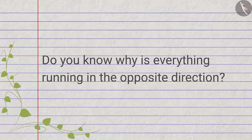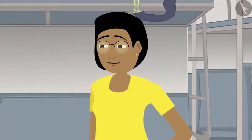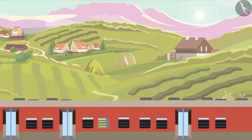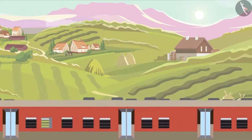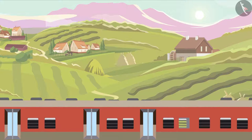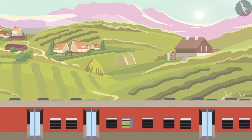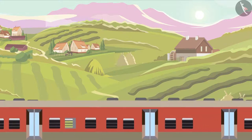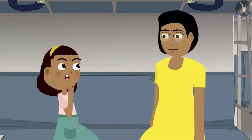Zia, no one is running outside. Rather, we are running. Look Zia, everything is stable outside, but our train is running forward at high speed, so it appears as if everything outside the train is running in the opposite direction.